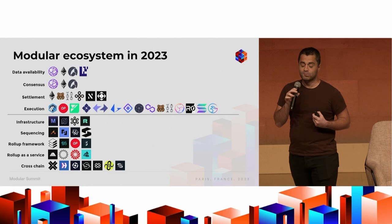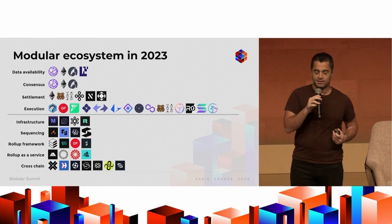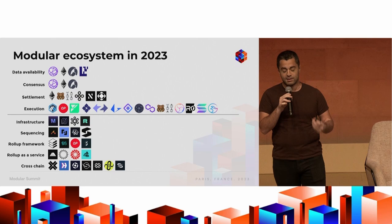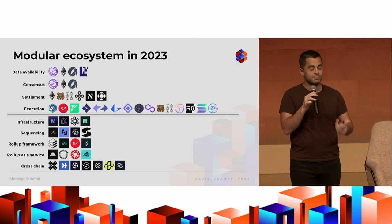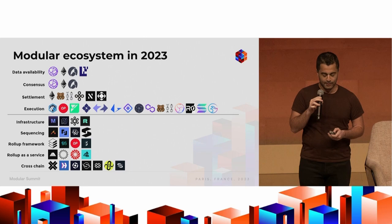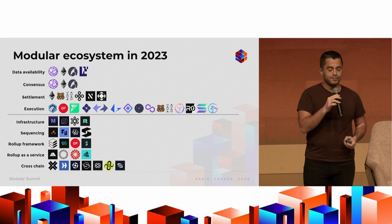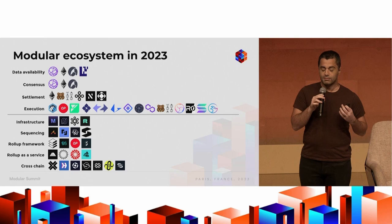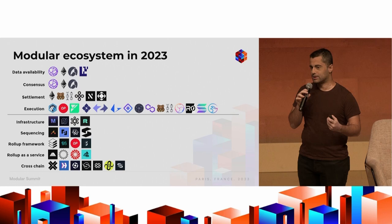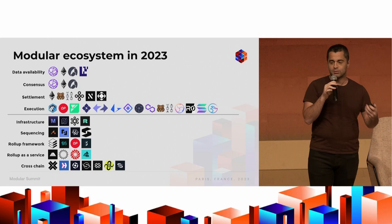Also interestingly, we have a lot of new infrastructure surrounding the modular stack — block explorers, analytics providers, and so on. We also have a surge in interest in sequencing providers: shared sequencing and decentralized sequencing that roll-ups can use to be more censorship resistant or have better soft-commitment finality. And then you have various roll-up frameworks which make it very easy for developers to deploy their own roll-up without having to write one from scratch.